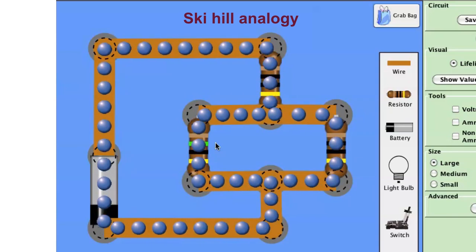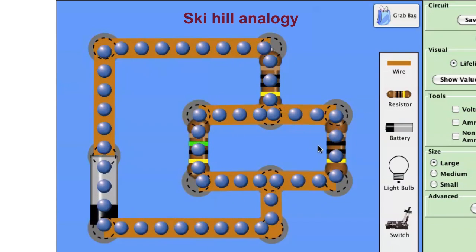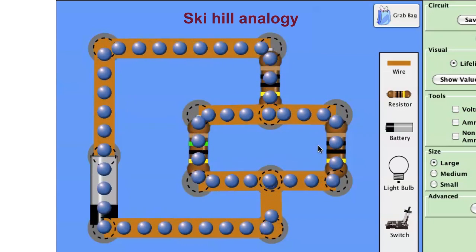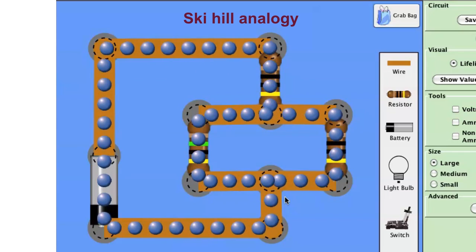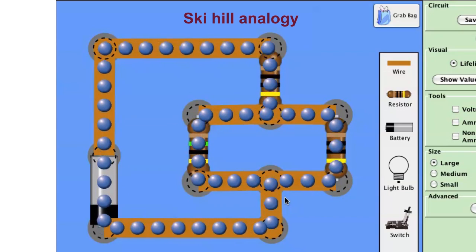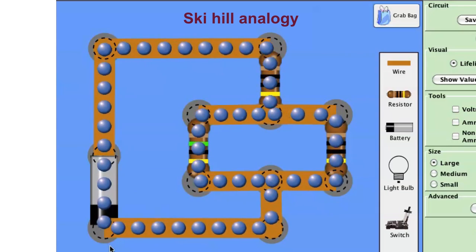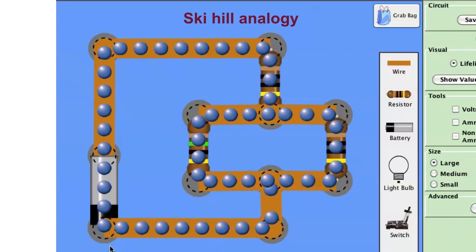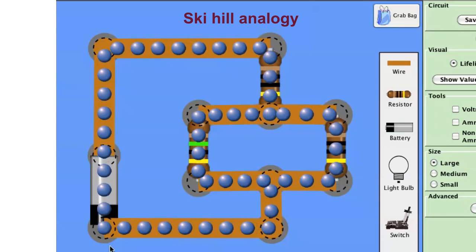So not as many skiers or charges choose that path. More charges slash skiers choose the path of least resistance, the easier trail, and they take that route back to the bottom. But then all those charges or skiers come back together at the bottom of the hill, and the battery slash ski lift lifts them back up again.